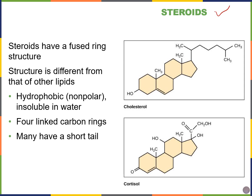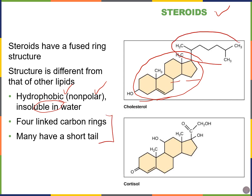Our last type of lipid are steroids. Steroids look very different from the other lipids because they have a fused ring structure — three six-sided rings and one five-sided ring. We still classify them as lipids because steroids are hydrophobic and not soluble in water. Some steroids have a short tail, and some also have a hydroxyl group, placing them in the alcohol classification — we call those sterols.